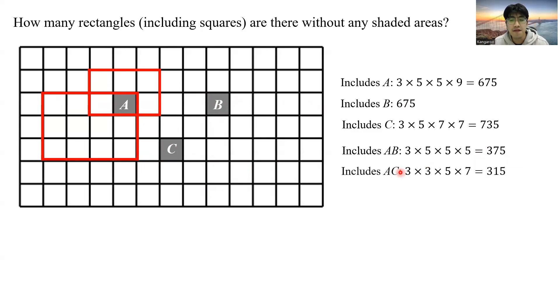And similarly, we can find out how many such rectangles include both AC and both CB. So we need to take away the sum of these three numbers so that we don't overcount. But then once we take away the sum of the three numbers, we still need to add back those rectangles that include all three shaded areas ABC.